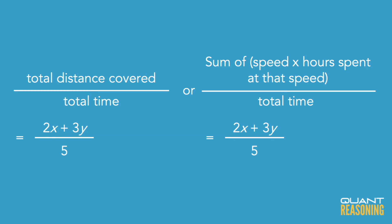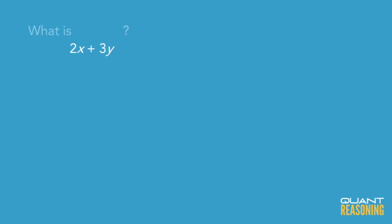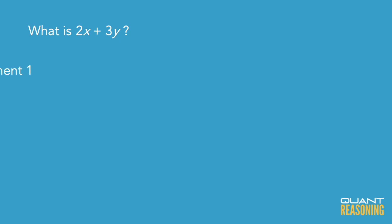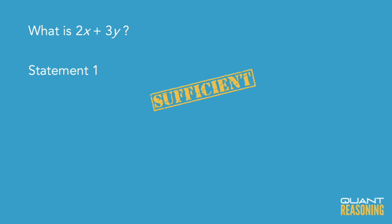In any event, the average speed for Marta will be 2x plus 3y divided by 5. Since this is data sufficiency, we can simplify and ask: what is 2x plus 3y? Statement 1 clearly tells us the value of 2x plus 3y, so that's sufficient on its own, and we can eliminate BCE.